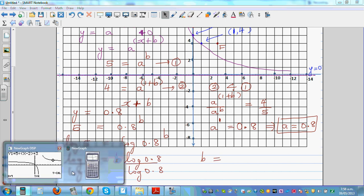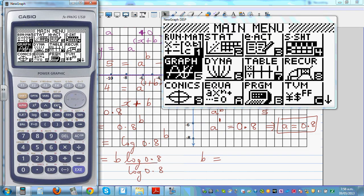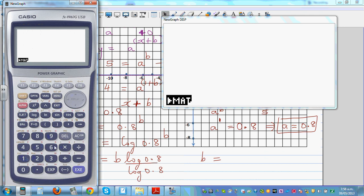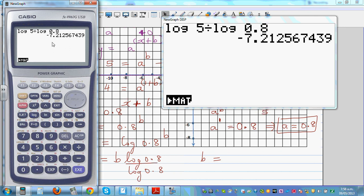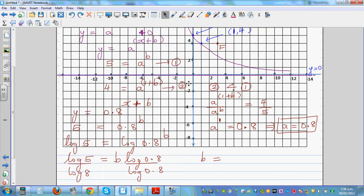So I need to use my calculator. Log 5 divided by log of 0.8, which is negative 7.21 in 2 decimal places. So your b is negative 7.2, or negative 7.21 if you want to write in 2 decimal places.